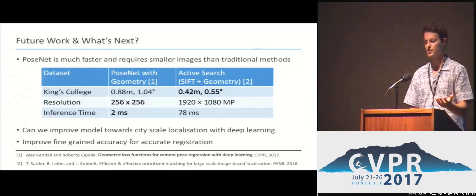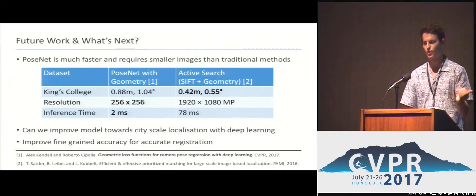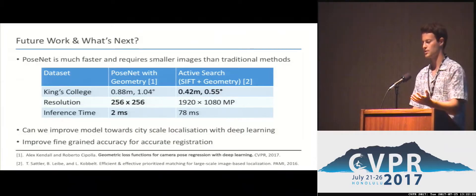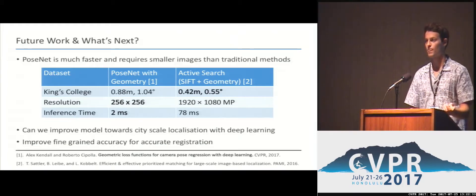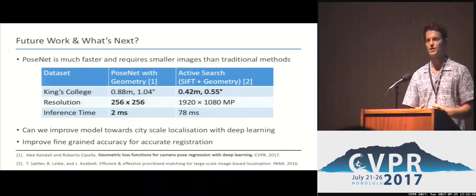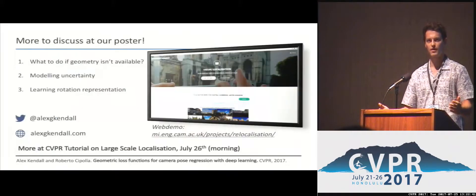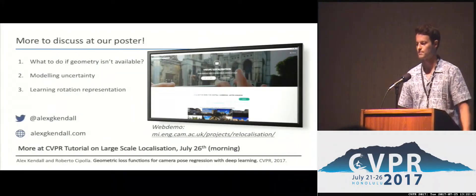However, it's getting closer. The advantages of this method are also that it requires much smaller resolution than SIFT-based registration approaches because it uses shape and context, and the inference time is much faster. Moving forward, we're really interested in scaling this method beyond small scenes to whole cities, and pushing it to fine-grained localization accuracy to compete with SIFT-based approaches.